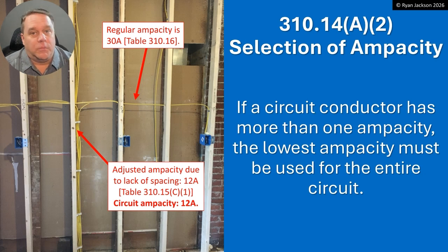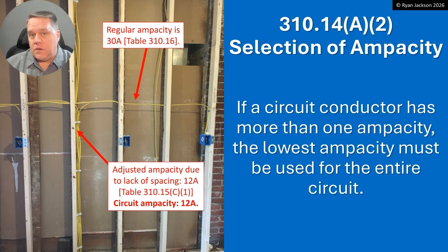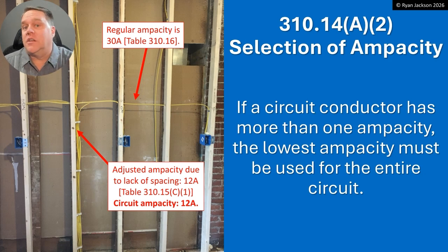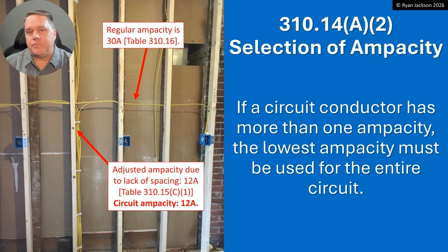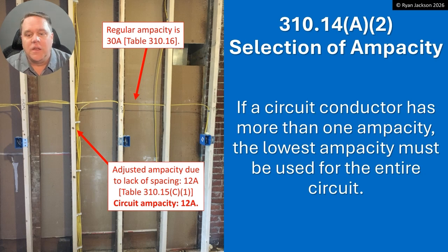If a circuit conductor has more than one ampacity, then the lowest ampacity must be used for the entire circuit. There's a lot to unpack here, and we're going to start with the definition of ampacity. Ampacity is a word that the code nerds made up — it's 'ampere capacity.' Only conductors have an ampacity; equipment doesn't. Equipment has ratings. The definition of ampacity is the amount of current that a conductor can carry continuously under the conditions of use without exceeding its temperature rating.